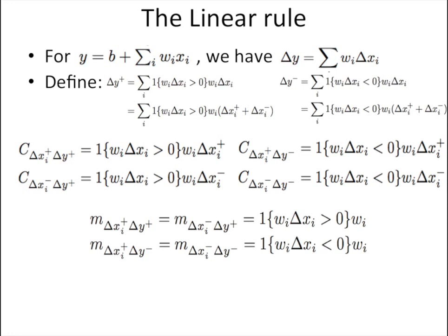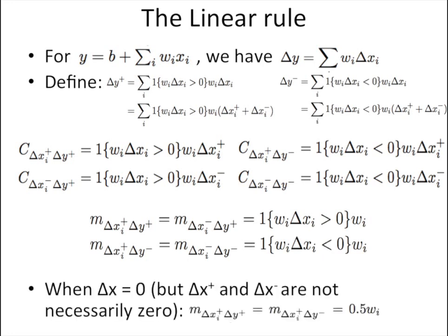Note that I have quietly glossed over the case where delta_x is zero. If delta_x is zero, we could just set its multiplier to zero and maintain our property that the contributions of the inputs sum to the delta of the output. However, if delta_x is zero, it doesn't necessarily mean that delta_x_plus and delta_x_minus are zero. If we were to set the multipliers to zero, we would never find out if anything interesting is happening with delta_x_plus and delta_x_minus. Thus, we strike a compromise and say that if delta_x is zero, we give half of the weight going to delta_y_plus and half going to delta_y_minus, and we do the same for delta_x_minus.